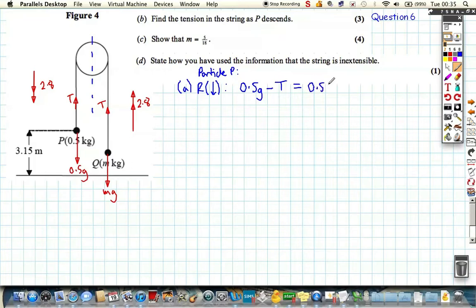The tension acting upwards is equal to MA, so it's 0.5 multiplied by 2.8. This is from Newton's second law, F equals MA. The overall resultant force is equal to mass times acceleration. So I can rearrange this. T is equal to 0.5g minus 1.4. G is 9.8, so T equals 3.5 Newtons. That's the tension. So this is 3.5 as is this tension, 3.5.